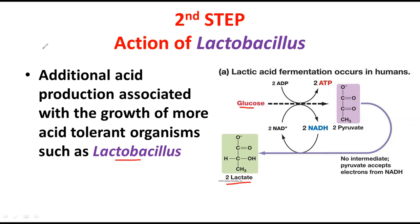As the acid gradually increases, the environment becomes more acidic and Lactobacillus continues increasing the amount of lactic acid by producing more of it. The first and second steps are similar, but the organisms involved are different — Lactococcus lactis first, then Lactobacillus. By the end of the second step, the milk is now very acidic.